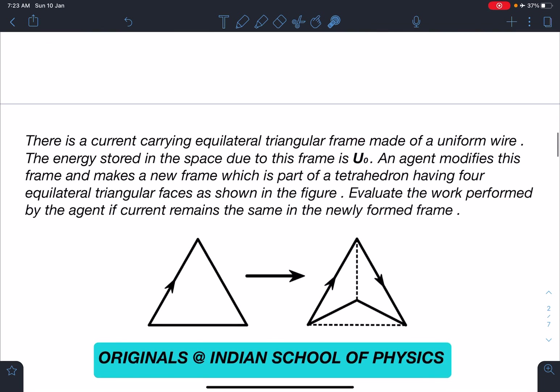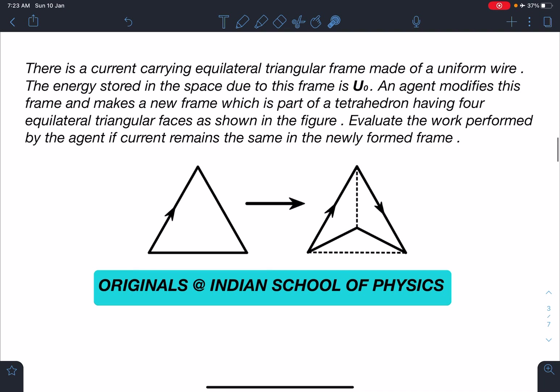Here is a statement of this problem. There is a current carrying equilateral triangular frame made of a uniform wire. The energy stored in the space due to this frame is U₀. An agent modifies this frame and makes a new frame which is part of a tetrahedron having 4 equilateral triangular faces as shown in the figure. Evaluate the work performed by the agent if current remains the same in the newly formed frame.